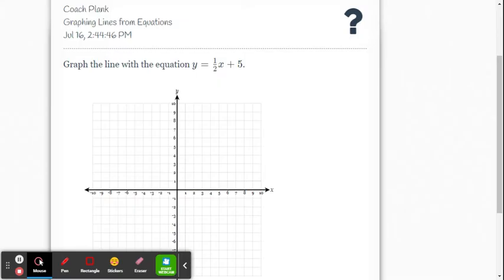So just remember, if you're ever given an equation that's not in slope-intercept form, you'd have to rewrite it in this form in order to graph it using this method. So let's start with y equals one-half x plus 5. We know the slope is the coefficient of x. That's the one-half. And the y-intercept is the 5.